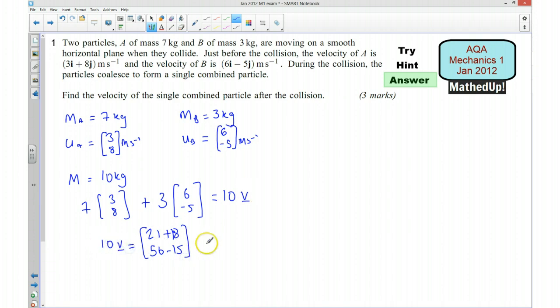Okay so that's going to be equal to, well 21 and 18 gives us 39. And 56 take away 15 gives us 41. So 10V is equal to 39, 41.